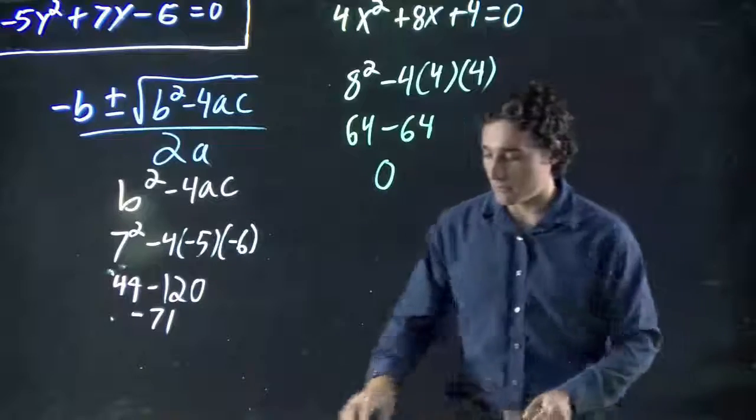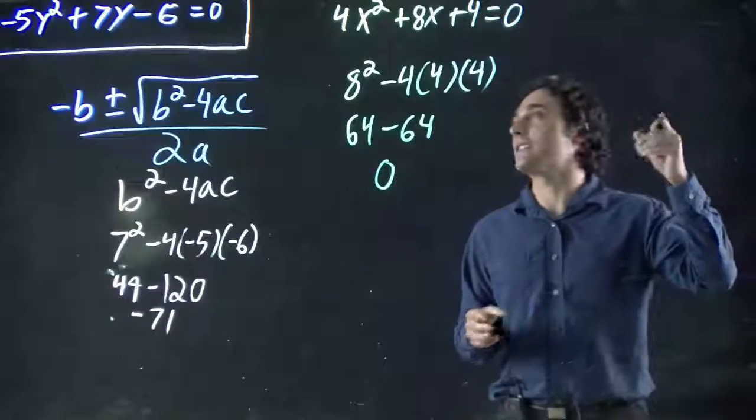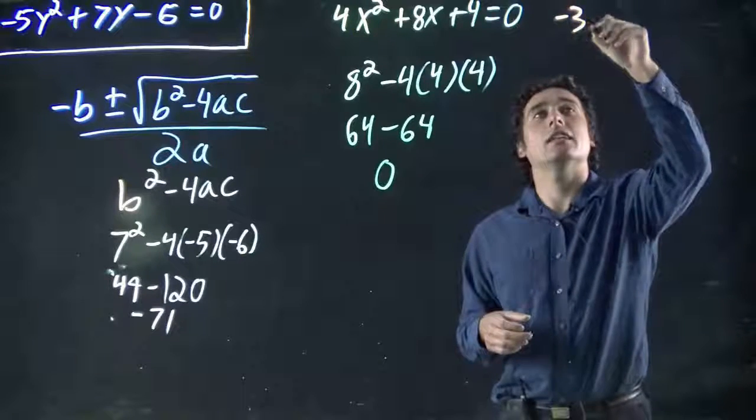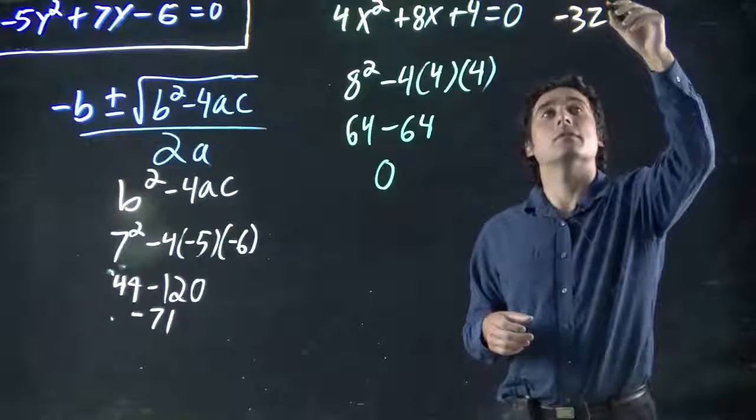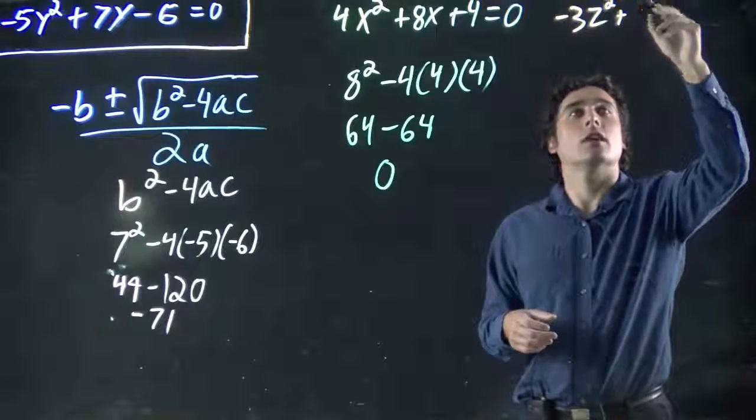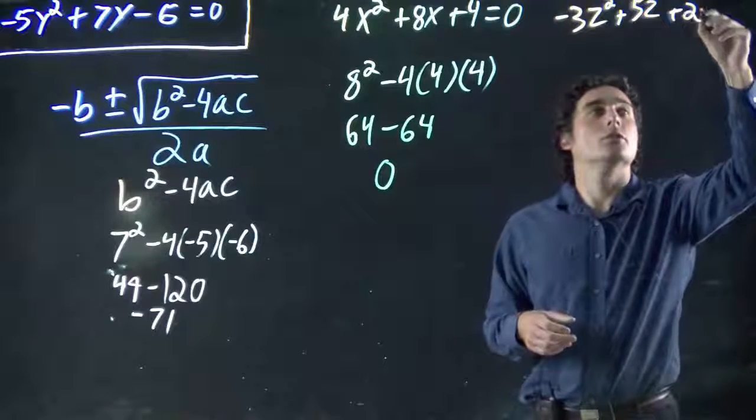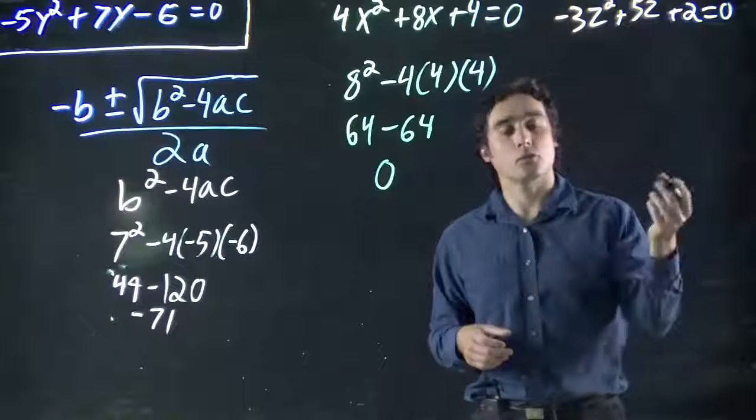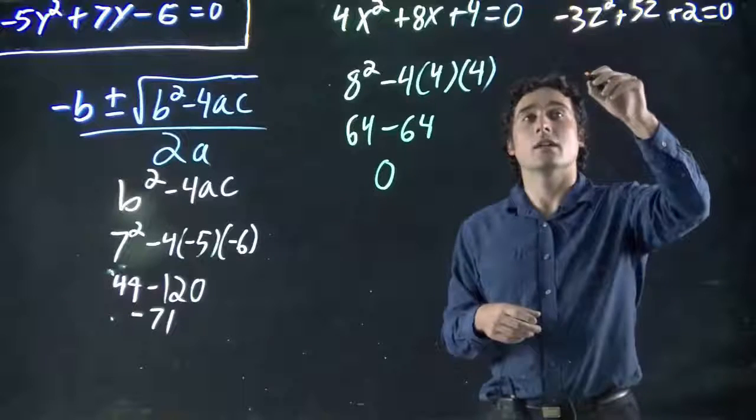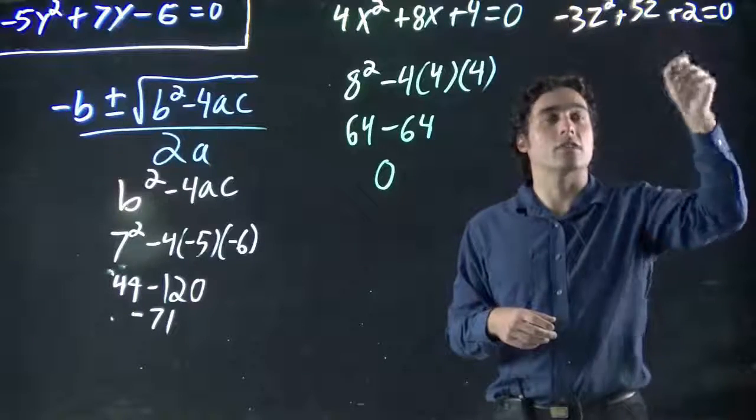Let's look at the third case now. Going to go back to orange, make things easy. And let's think of a possible equation. Let's go minus 3, let's go with z this time. z squared plus 5z plus 2 equals 0. Great. Discriminant. What do we got?